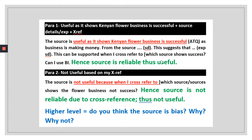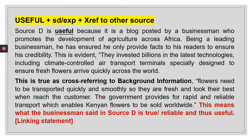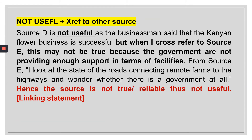Always remember to answer the question and include a utility statement. It is useful because there is a lot of investment, confirmed by cross-referencing the background information, making the source reliable. It is not useful because Source E shows that infrastructure like roads is not conducive — if the roads are poor, the claim of success is questionable, making the source not fully reliable.